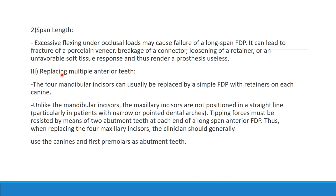Coming to replacing multiple anterior teeth. The four mandibular incisors can usually be replaced by a simple fixed dental prosthesis with the retainer on each canine. Unlike mandibular incisors, the maxillary incisors are not positioned in a straight line, particularly in different arch forms. Tipping forces must be resisted by means of two abutments at each end.